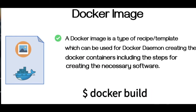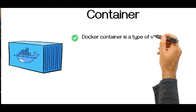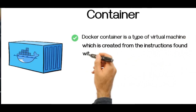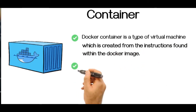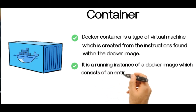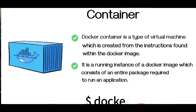A Docker container is a type of virtual machine which is created from the instructions found within the Docker image. It is a running instance of a Docker image, which consists of an entire package required to run an application. You can use docker run to run a container out of that image. So let's create a Dockerfile and build an image out of that.